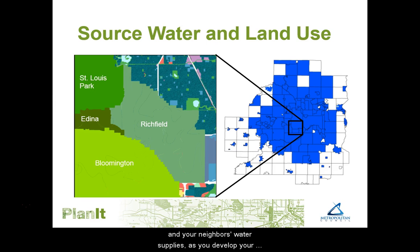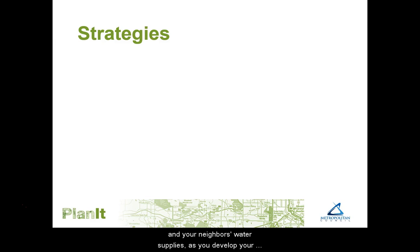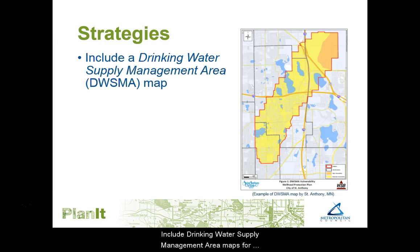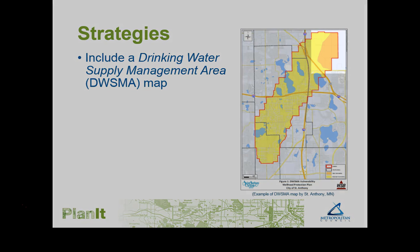Because land use planning in your community may affect your own and your neighbor's water supplies, as you develop your comprehensive plan, include drinking water supply management area maps for all communities, not just your own. Pay close attention to areas where groundwater is most vulnerable.